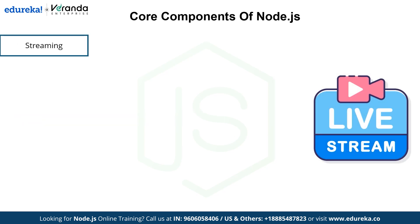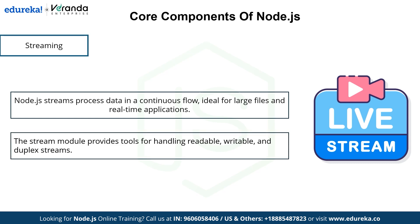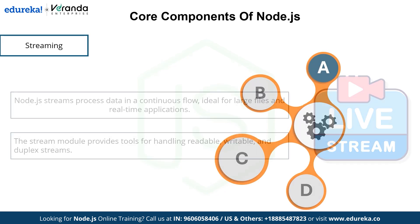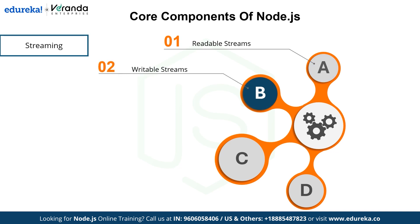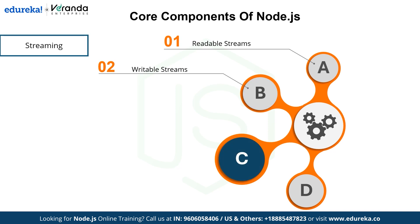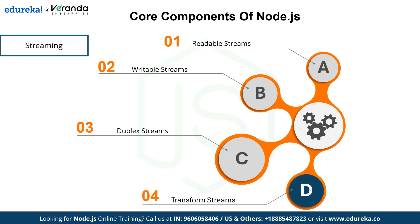The next component is streaming, a powerful feature for processing data efficiently. Streams handle data as a continuous flow, making them perfect for working with large files or real-time applications. For example, instead of loading an entire file into memory, streams allow you to process it piece by piece. Streams come in four types: readable streams for reading data chunk by chunk; writable streams for writing data piece by piece, ideal for logging or saving files; duplex streams that can both read and write simultaneously, perfect for two-way communication like chat applications; and transform streams that modify data as it flows, such as compressing files on the fly.